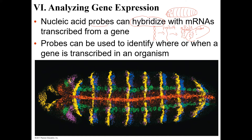The probe is going to have some kind of way to signal its presence — usually it's going to be fluorescent. You can see fluorescent yellow and blue. When I was younger, they generally used radioactive probes. So the probes are used to identify where and when a gene is transcribed in an organism.